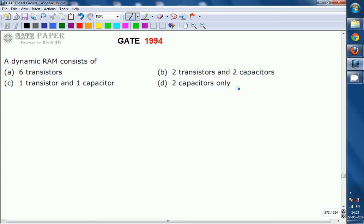A dynamic RAM consists of: (A) 6 transistors, (B) 2 transistors and 2 capacitors, (C) 1 transistor and 1 capacitor, (D) 2 capacitors.